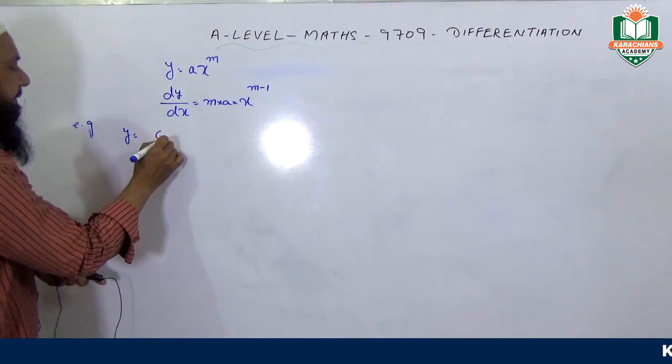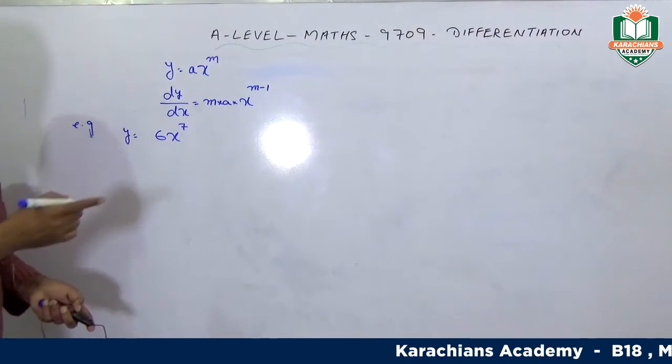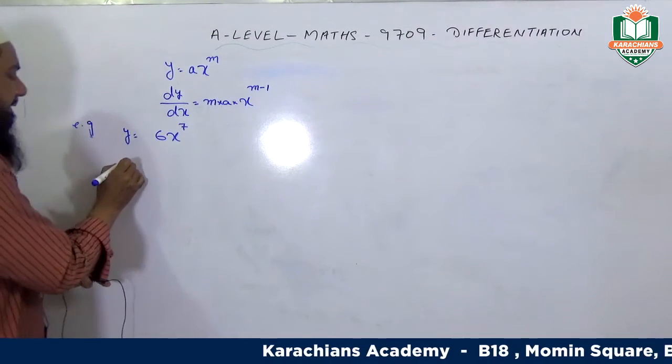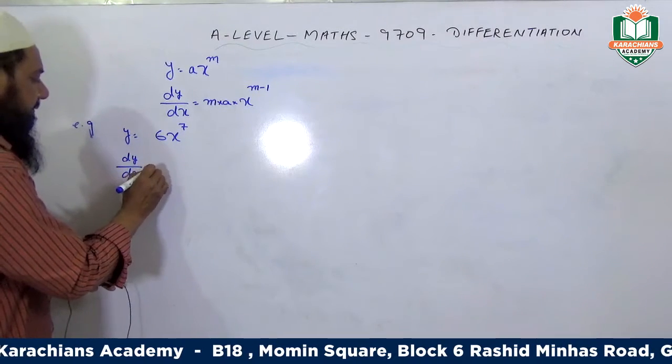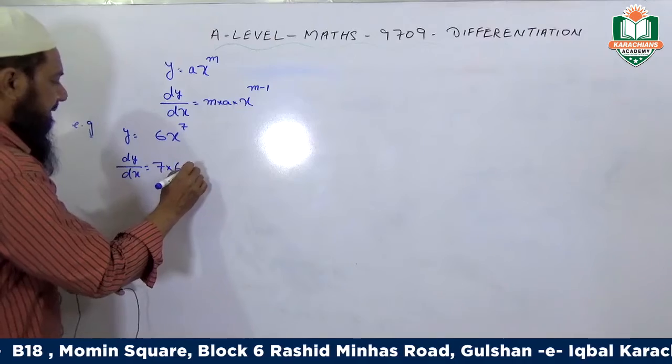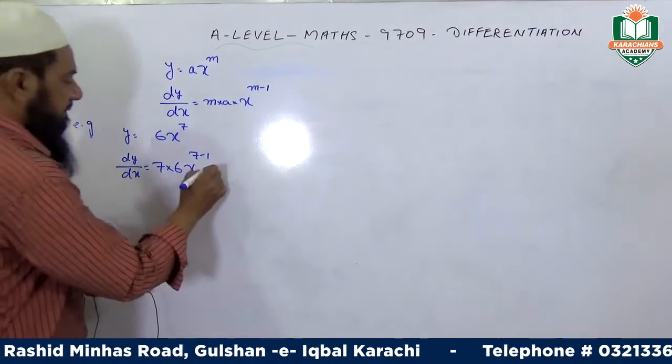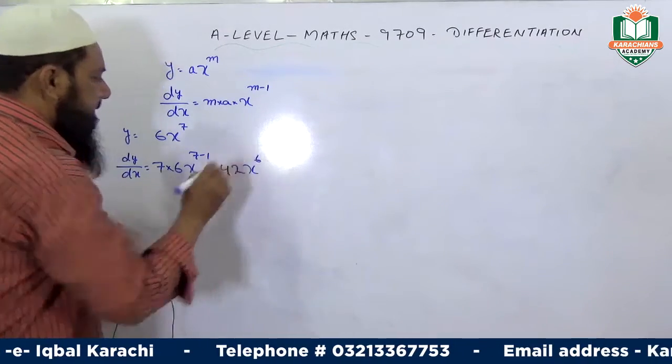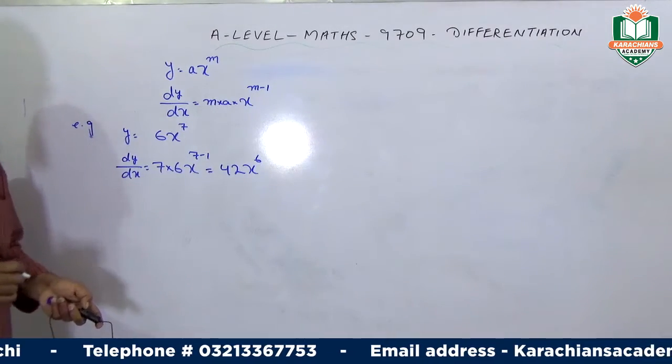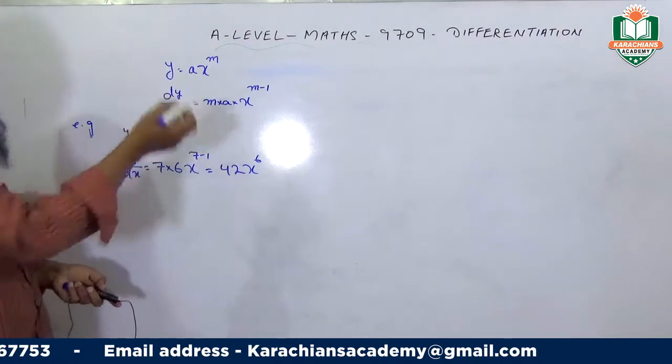For example, y equals 6x^7. Now differentiate y equals 6x^7 with respect to x. dy/dx equals 7 times 6 times x^(7-1), which gives us 42x^6 as the answer. The simple formula is: the power comes down and the power decreases by 1.